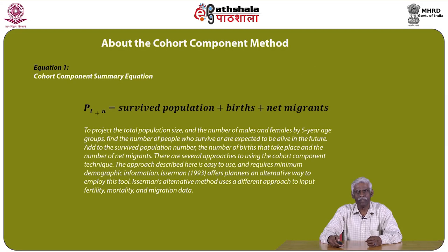As we have seen in earlier slides, the cohort component summary equation is usually denoted as P(t+n), which is equal to survived population plus births plus net migrants.